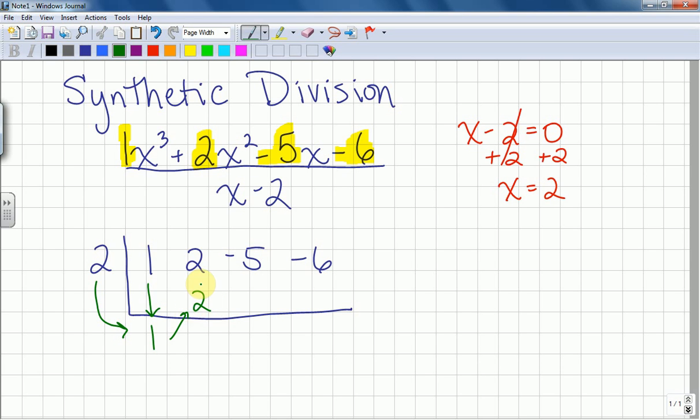So once I have that 2 written inside the problem, I can see I have two numbers here together in a column. I have to add those. Well, 2 plus 2 gives me 4. So to recap, we started just by bringing the first number down. We know that we take everything in this bottom row, and we're going to multiply it by this 2. So now that I have a 1 down there, I took 2 times 1, which gave me 2. I wrote that up here. Then I added these two together. 2 plus 2 is 4.